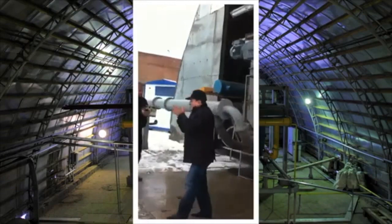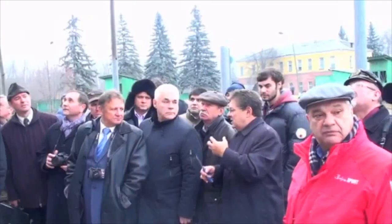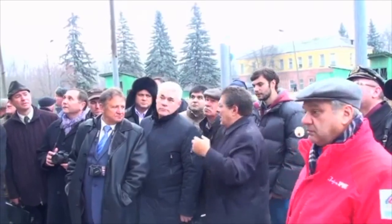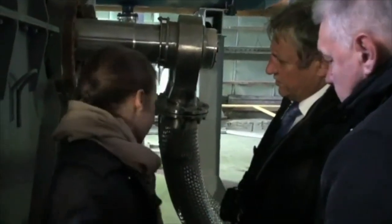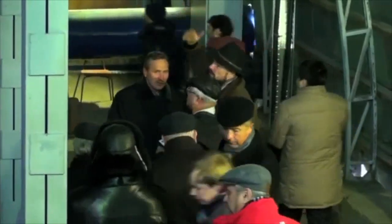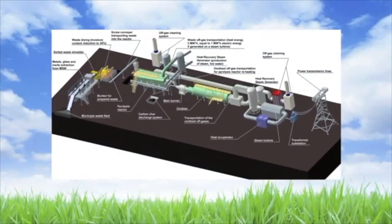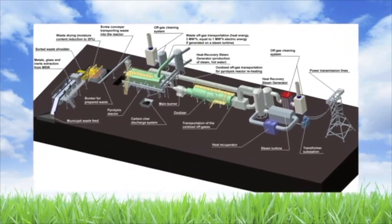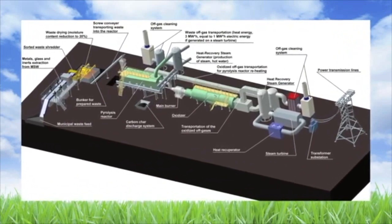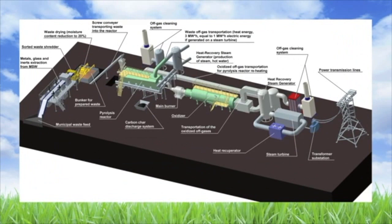On November 8th, 2011, the facility was presented to potential customers and the media. This innovative equipment was certified and implemented into commercial production. The waste conversion pyrolysis facility, equipped for processing raw municipal waste, is composed of main elements: a sorting line, a shredder, a dryer, a reactor, a burner, an oxidizer, an off-gas cleaning system, and an energy block.